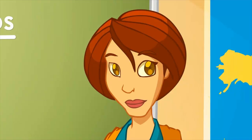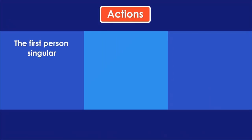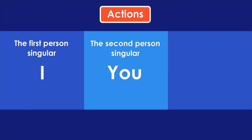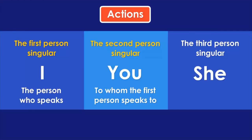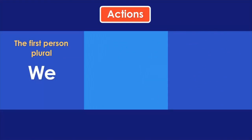The verbs cannot tell us that on their own. We could be talking in the first person singular: 'I skip the rope.' Or the second person singular: 'You skip the rope.' Or the third person singular: 'She skips the rope.' The first is the person who speaks. The second is the one who listens, and the third is a person we speak about.